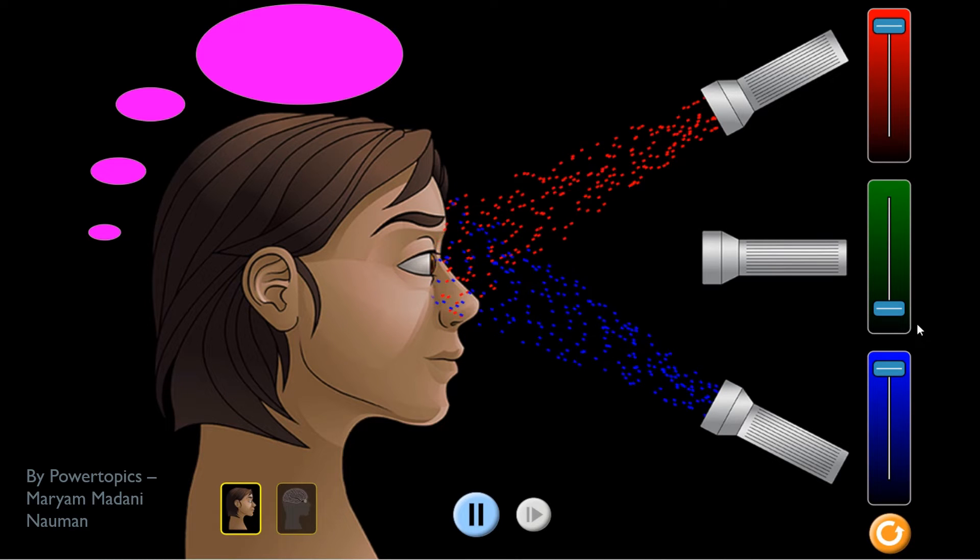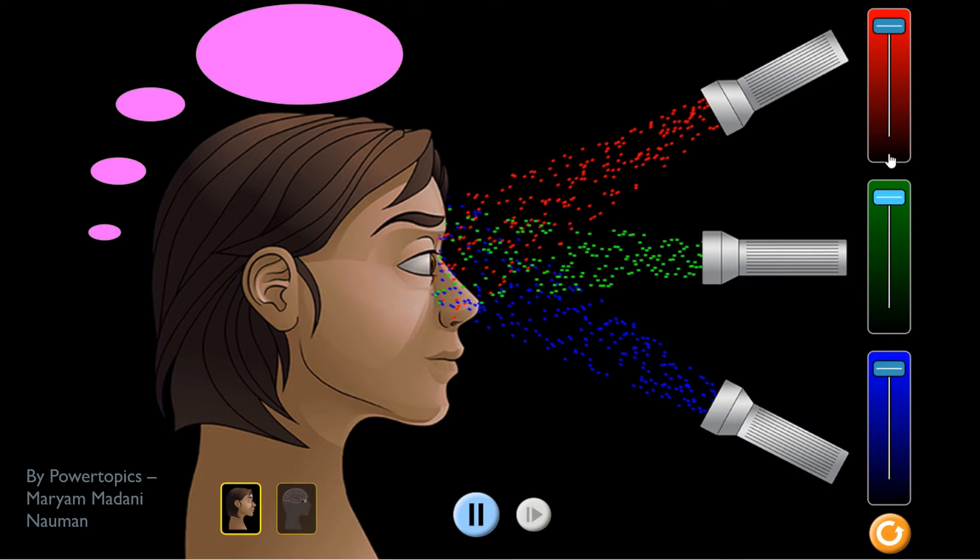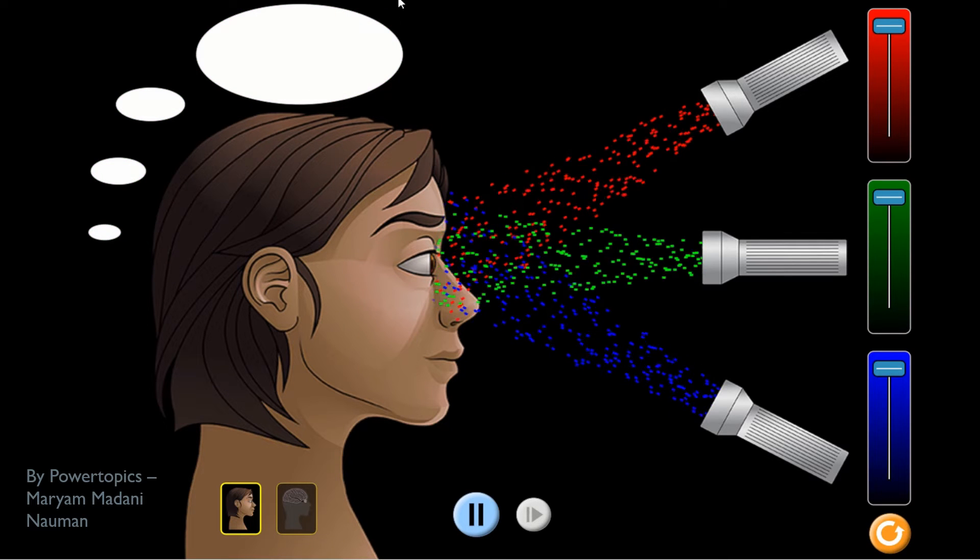And what will happen if we added all the light colors together? It will be white.